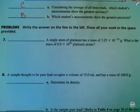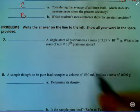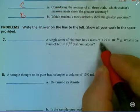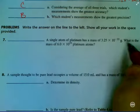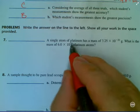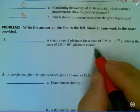Number seven, getting into some calculations here. A single atom of platinum has a mass of 3.25 times 10 to the negative 22 grams. What is the mass of 6.0 times 10 to the 23rd platinum atoms?